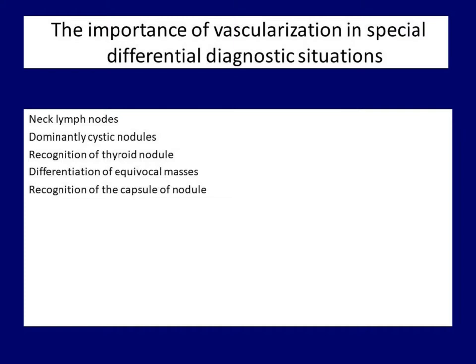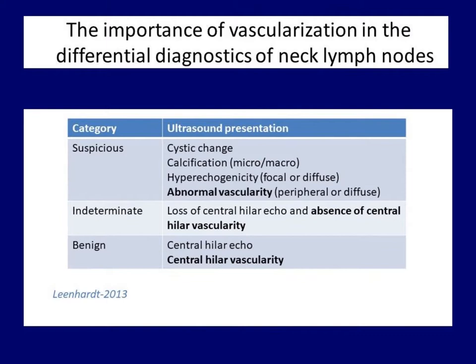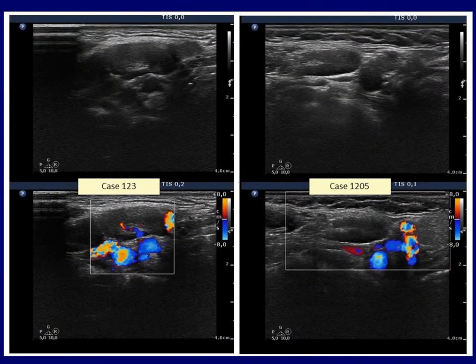Our final theme focuses on the role of vascularity in other situations. The most important of these is discussed in detail in the literature. Regarding the role of vascularity in the differentiation of lymph nodes, we present the classification by Lenhardt and co-workers, in which three types of nodes present with three different vascular patterns. Benign nodes are characterized by the presence of central vascularity, but unfortunately this is frequently not detectable and therefore its absence has limited relevance. More important is the detection of an abnormal vascular pattern, though it remains the least important among suspicious ultrasound findings. In our practice, more than 80% of benign reactive type lymph nodes lack any blood flow.